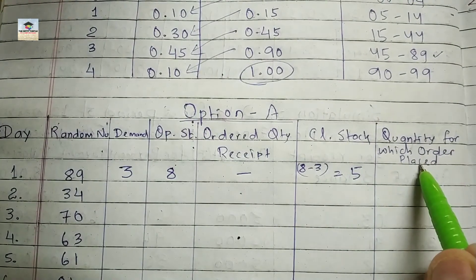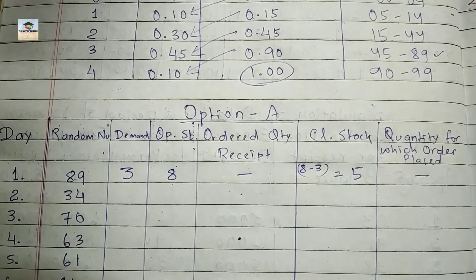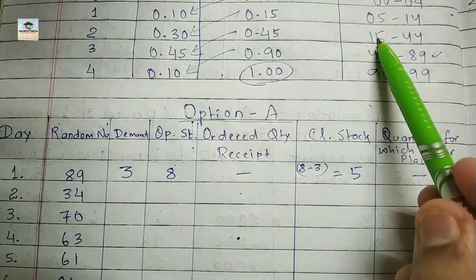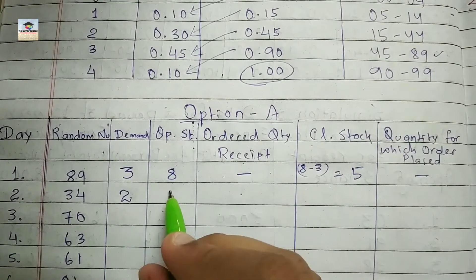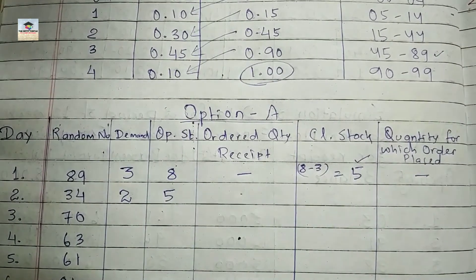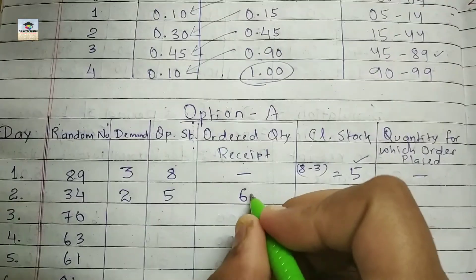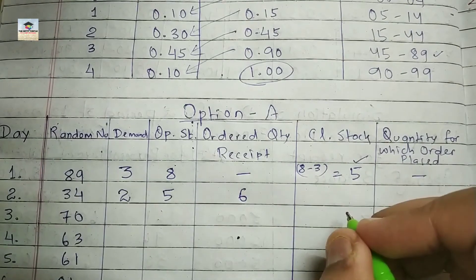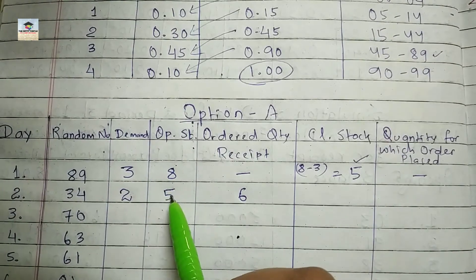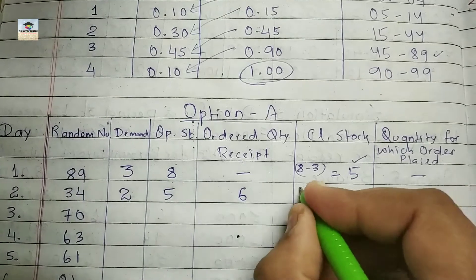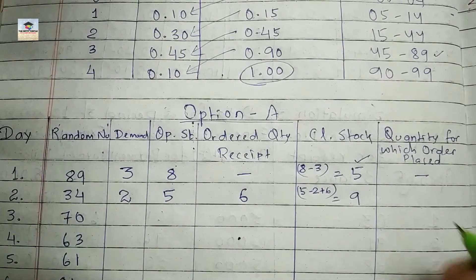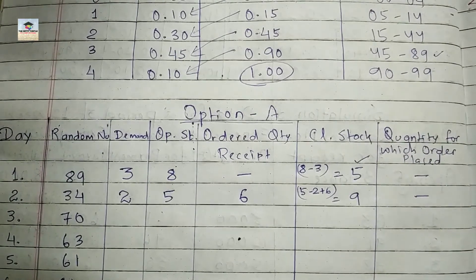The closing stock of day one (five) becomes the opening stock of day two. On day two, demand is two books and the six ordered books are received. So closing stock is five minus two plus six, which equals nine. Quantity for which order is placed is zero.